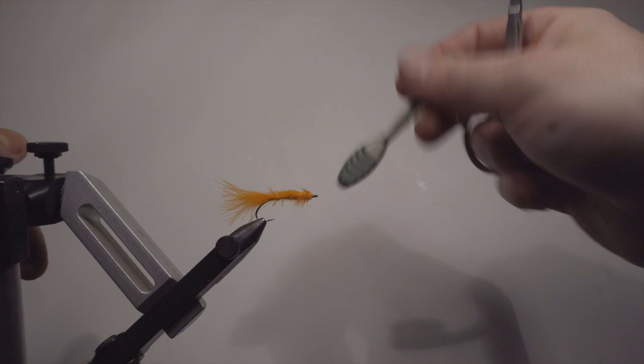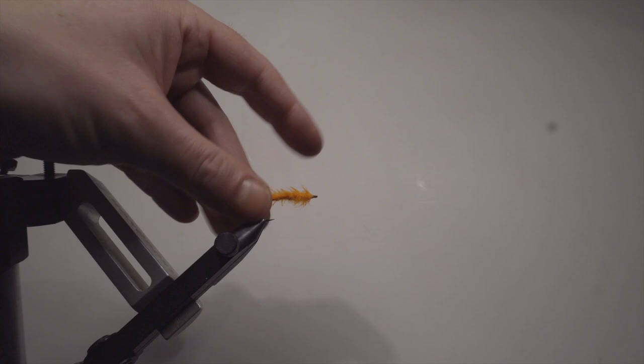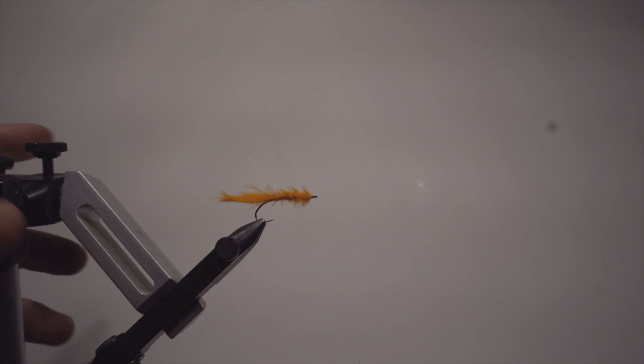So the monofilament ribbing just makes the fly stronger. It doesn't show really, which is the purpose of it. I don't want any segment or ribbing showing. I just want the strength of it. So this is my take of the clam worm, which is called the killer worm, which I started tying about 20 years ago.